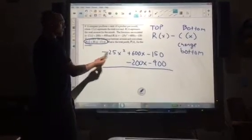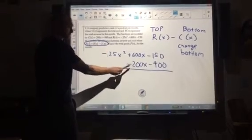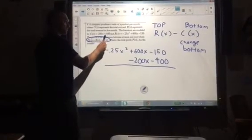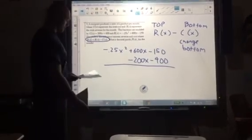So I've got r on top, c on the bottom, and then you'll notice that positive 200x became negative 200x, positive 400 became negative 400, and then from there we combine like terms.